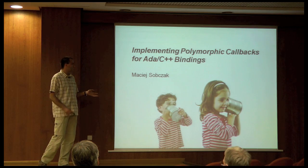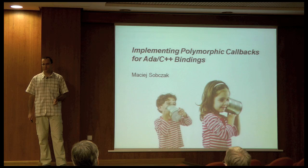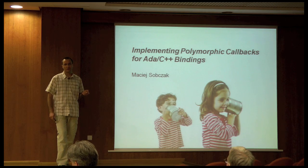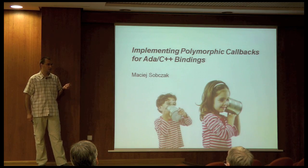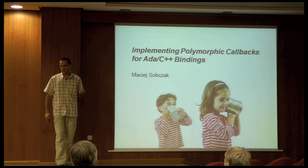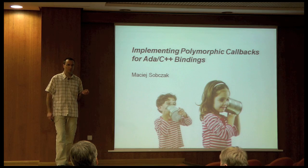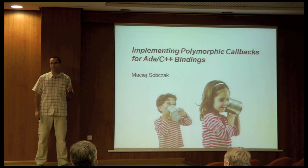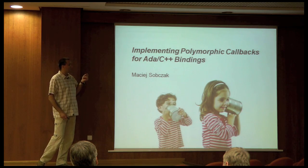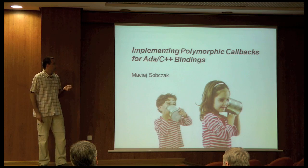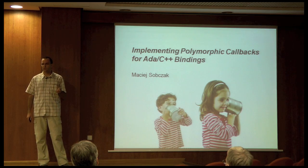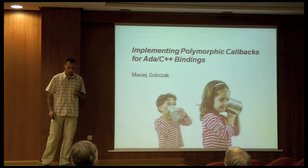The problem statement is that there is a C++ library which offers some interesting functionality and contains a notification mechanism that allows to deliver information about some events to users. If that notification mechanism is based on object-oriented concepts, then it's a bit challenging to create a good binding for such a library while preserving the object-oriented nature of the callback. The polymorphic keyword really refers to the dispatching nature of this notification delivery.